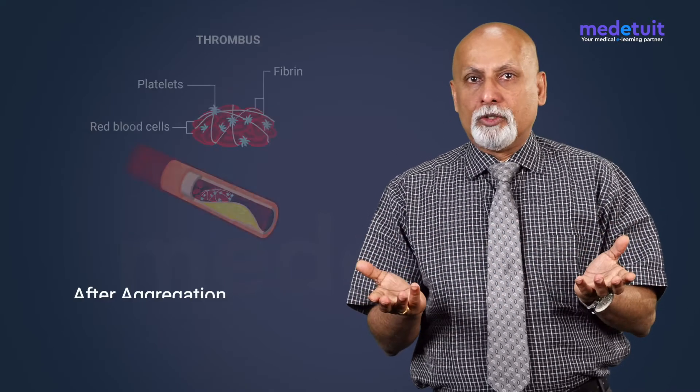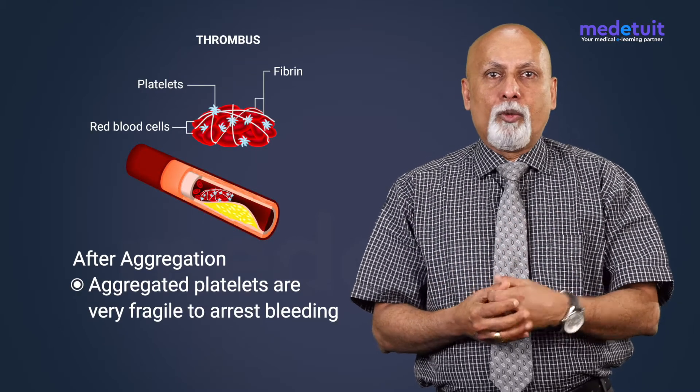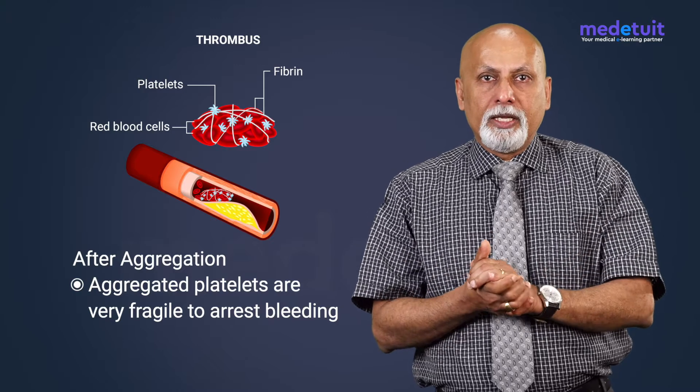In the video one can easily differentiate these different phases: first adhesion, then activation and release of content, and these contents attracting more and more platelets resulting in aggregation. The aggregated platelets are very fragile and loose with less strength, barely enough to arrest the bleeding. Later they are reinforced by fibrin threads, forming a loose platelet plug.